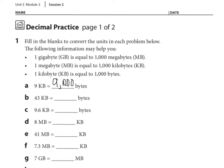B says, 43 kilobytes equals how many bytes? What would be the answer? That's right, 43,000.